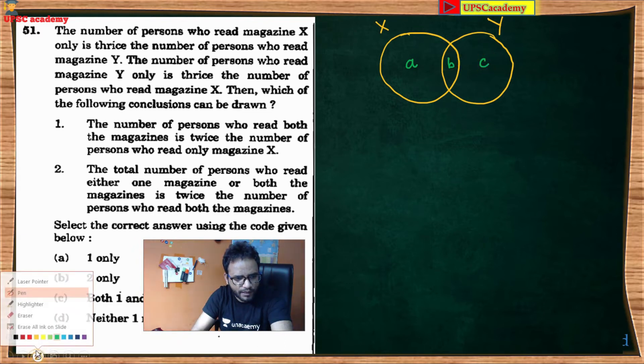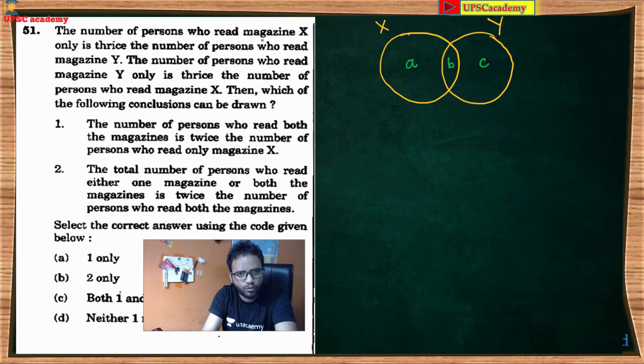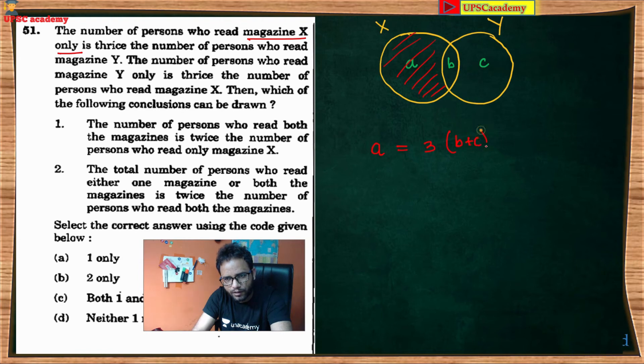Pehla statement kya hai? First statement: the number of persons who read magazine X only. X only kitna? X only aapka ye wala portion hoga, sirf a hoga. Second statement: the number of persons who read magazine Y only. Y only kitna? c. c is equal to thrice the persons who read magazine X. X kitna? a plus b. Ye hoga.